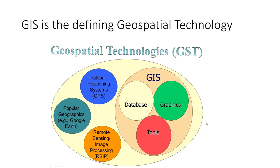GIS is the defining geospatial technology. Geospatial technologies include global positioning systems, remote sensing and image processing from satellites, and popular geographics — like using Google Earth. Within GIS itself, the largest of these bubbles, we have database, graphics, and related tools that allow us to take advantage of geographic data. There are three things from the opening slide: we can organize and manage that data, we can analyze relationships, and we can display that data in the form of maps, visualizations, or animations.